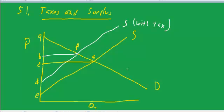So the Original Consumer Surplus is A, C, G, and the Original Producer Surplus is C, E, G.